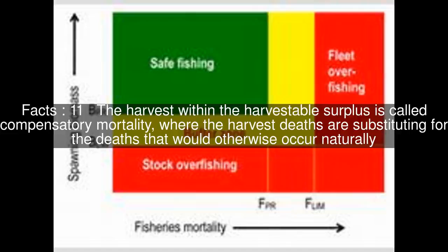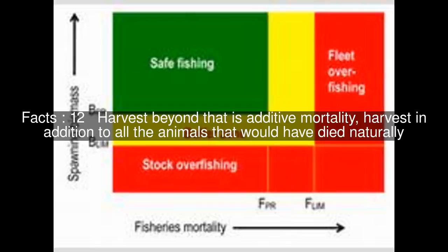The harvest within the harvestable surplus is called compensatory mortality, where the harvest deaths are substituting for the deaths that would otherwise occur naturally. Harvest beyond that is additive mortality — harvesting in addition to all the animals that would have died naturally.